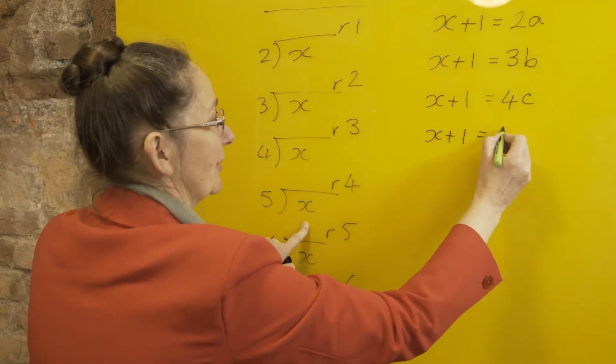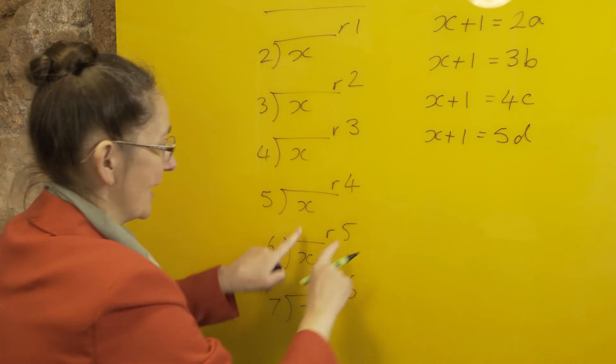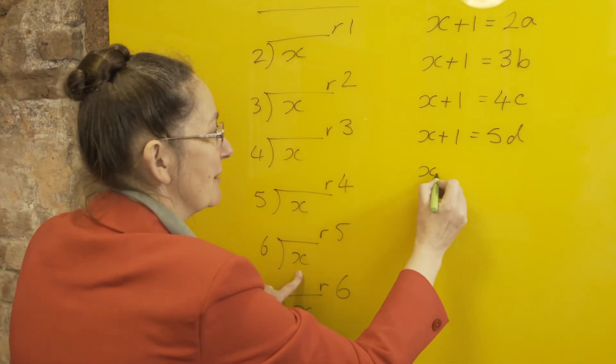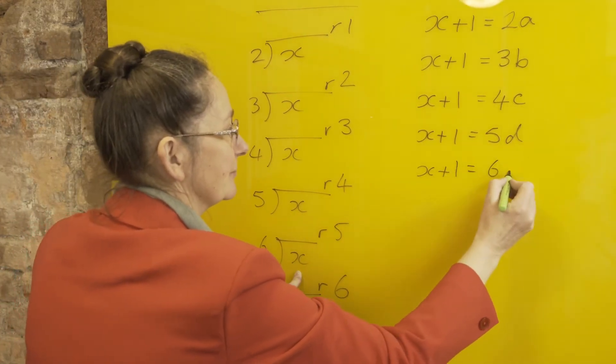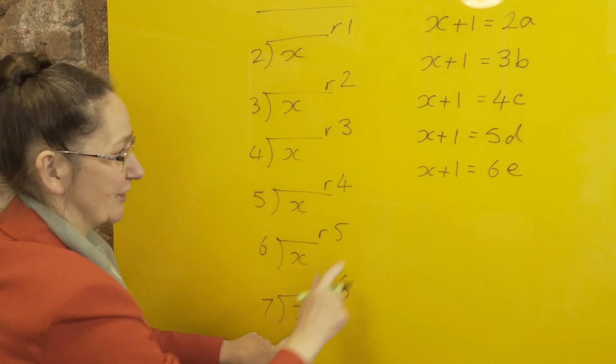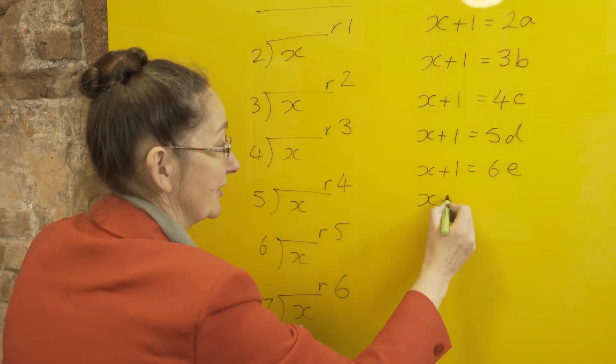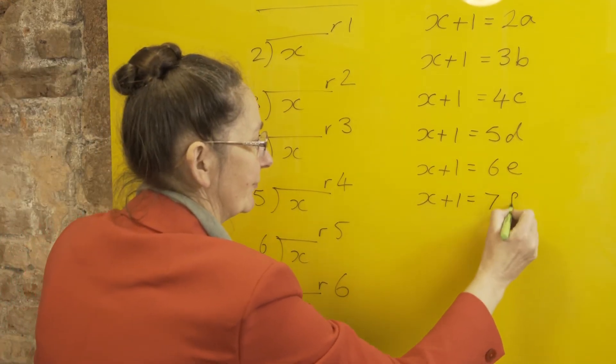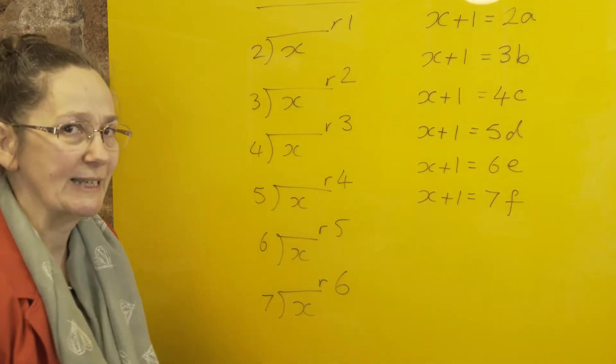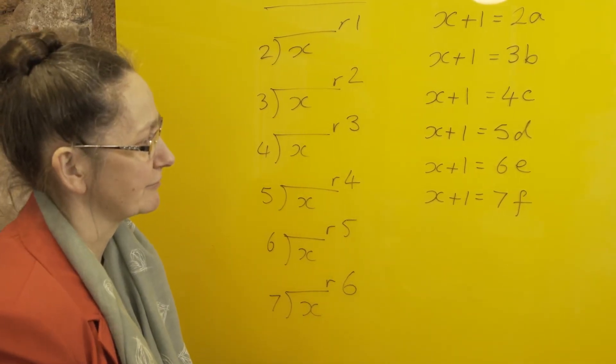If I add 1 onto x, it must be a multiple of 6. If I add 1 onto x, it must be a multiple of 7. So a, b, c, d, e, and f are just some integers—I'm just saying they are multiples of.